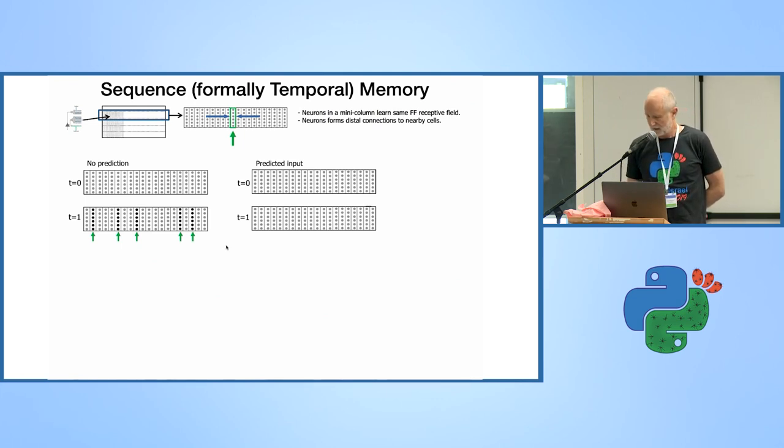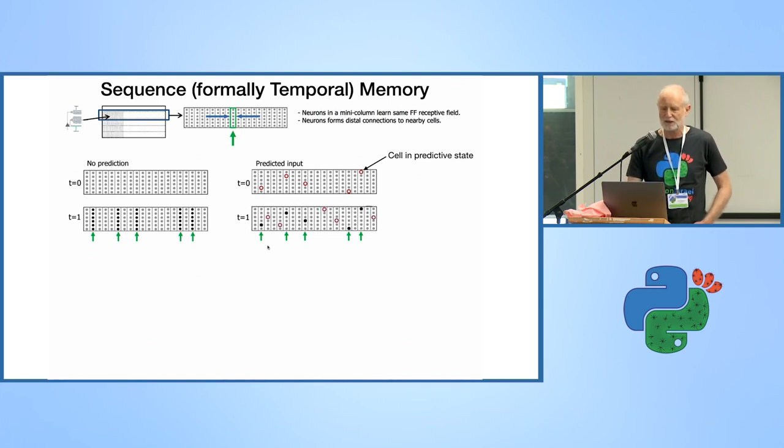At T0, I haven't learned anything and maybe I had a previous input. Now I put a feedforward input from the bottom and all the mini columns that are attached to that input are activated, as you can see here on the left-hand side. Eventually, it will learn. When it has learned, let's say we had the previous input and now this input, that previous input comes in and will put neurons into a predictive state. Those are the red arrows here. If the same input that it learned before comes in and matches up with the predictive state, it will cause the neurons in a predictive state to become active, which is the black.